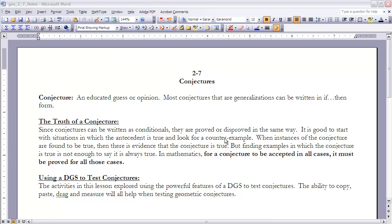When instances of the conjecture are found to be true, then there is evidence that the conjecture is true - not that it is true, but there's evidence that it's true. But finding examples in which the conjecture is true is not enough to say it's always true.